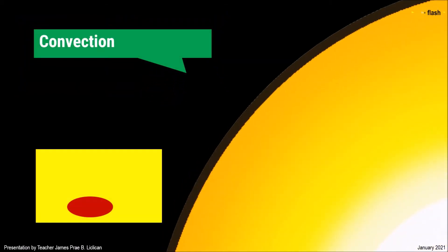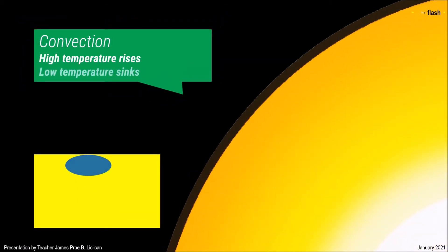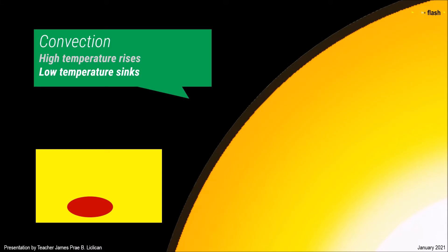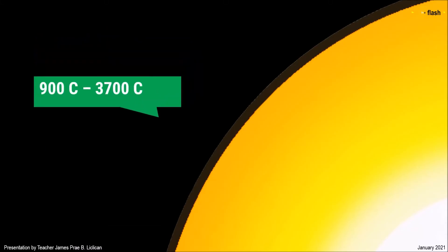The mantle is also where convection happens. Convection is a process where hot magma from the lower mantle rises to cool down in the upper mantle, and warm magma from the upper mantle heats up as it sinks towards the lower mantle. Because of this, the temperature of the mantle has significant variations. The upper mantle can be as low as 900 degrees Celsius, while the lower mantle is as high as 1,000 to 3,700 degrees Celsius. However, both sides are still composed of ferromagnesian silicate rocks.